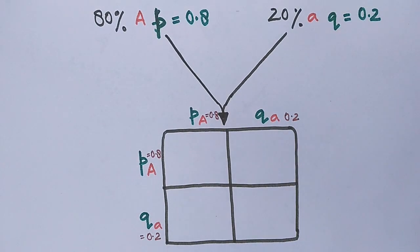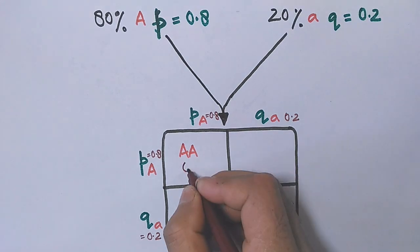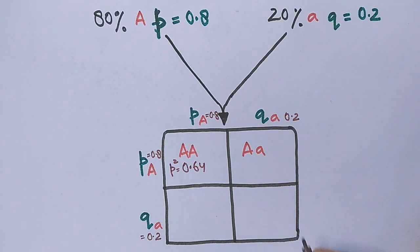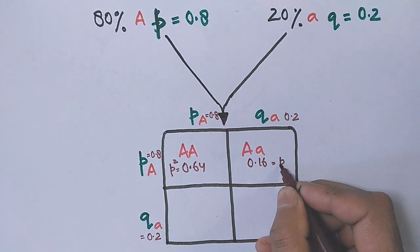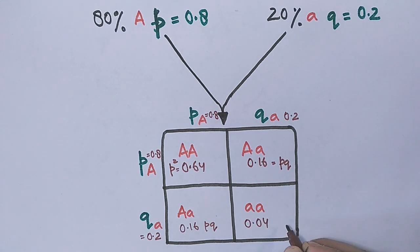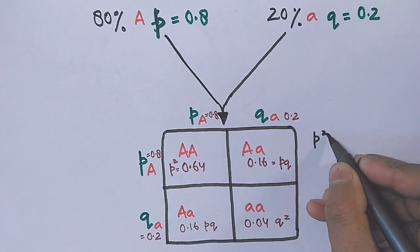When we cross them we get the following data with frequencies. P² comes to be 0.64 while Q² comes to be 0.04. And the frequency of heterozygous genotypes comes two times 0.16. That's why we denote it with 2PQ. Upon calculation we get the following values.